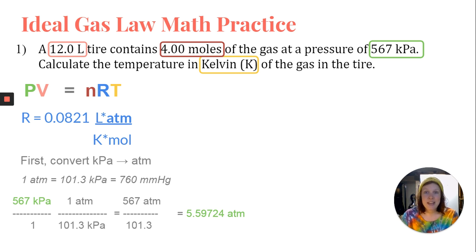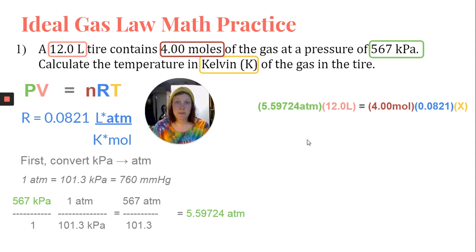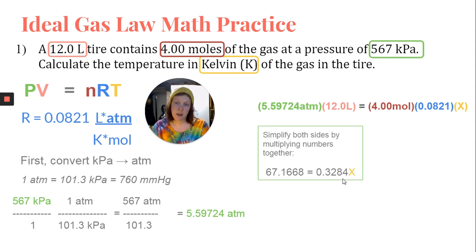Alright. Now we've got atm. We can plug this information into the ideal gas law equation. This is what our setup should look like. The first thing that I want to do is simplify this problem by combining like terms. So I'm going to multiply our pressure and our volume together. I'm also going to multiply the number of moles to the ideal gas constant. And it will give me 67.1668 is equal to 0.3284X. Now notice that I'm not paying attention to sig figs. Don't worry about sig figs until the very last step.